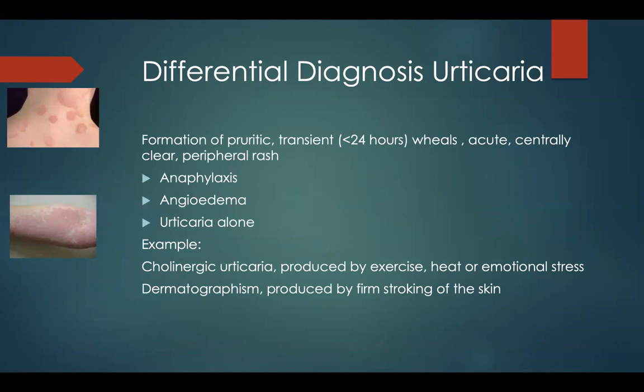Going on to urticaria first, this is a very common presentation and can present in many different ways with varying degrees of severity and also with many other associated features such as urticaria with anaphylaxis, urticaria with angioedema, and then urticaria isolated by itself. Angioedema is very similar in a lot of ways to anaphylaxis in that they both have swelling of the subcutaneous tissue. But noticeably with angioedema, these lesions are rarely itchy, and this is in stark contrast to the intense pruritus which is often associated with an urticarial type rash.